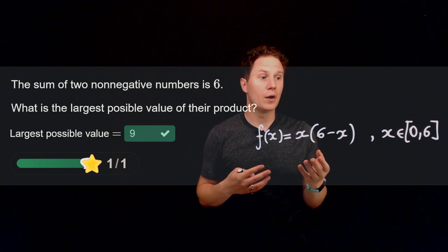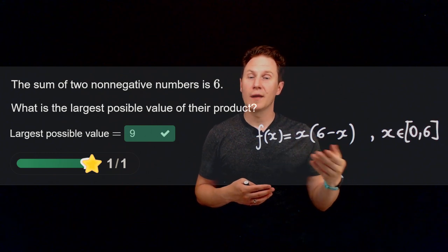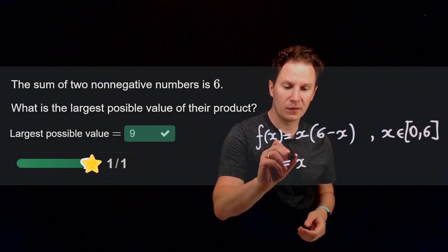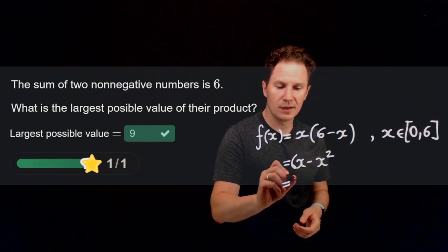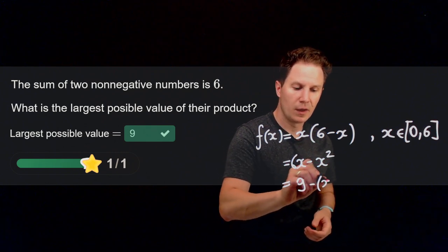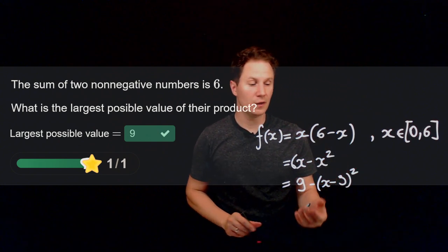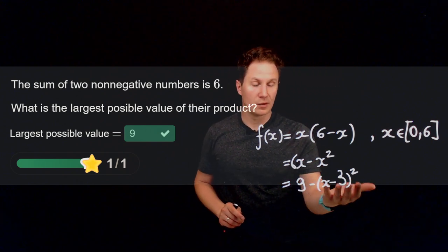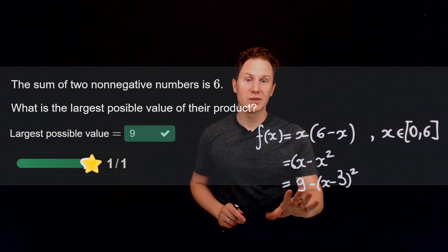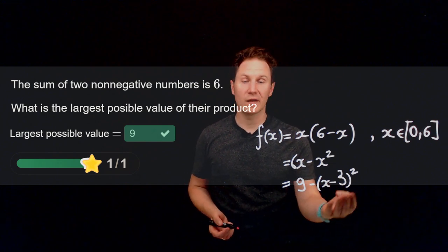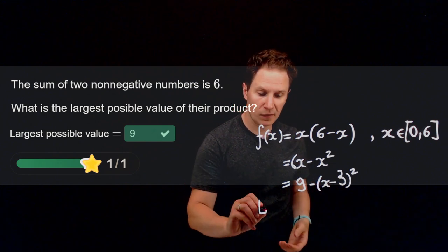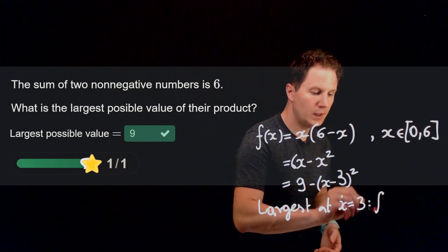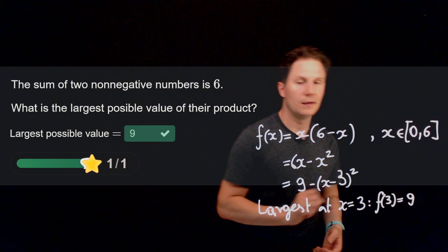By the Extreme Value Theorem, there exists a point between 0 and 6 at which the function attains its maximum value. Expanding gives 6x minus x², and completing the square gives 9 minus (x minus 3)². To maximize this, we need to subtract zero, which happens at x equals 3. So the largest product is f(3) = 9.